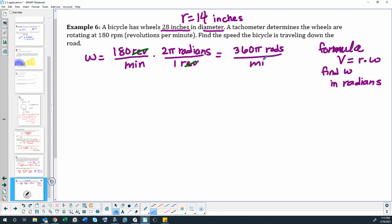Okay, so there's omega. Now to find velocity, we have radius which is 14 inches. I'm just going to abbreviate that. So we have 14 inches radius, we're going to multiply that by 2π radians.